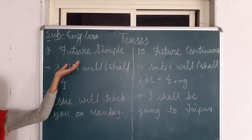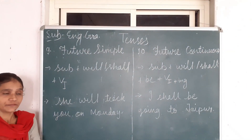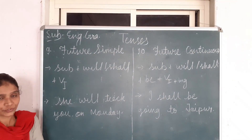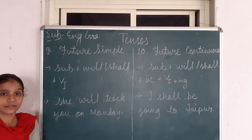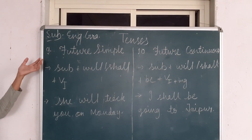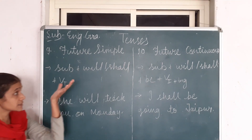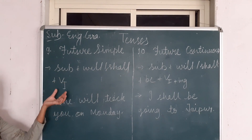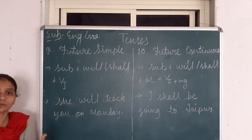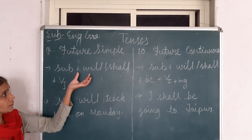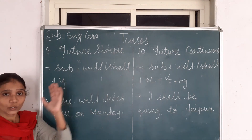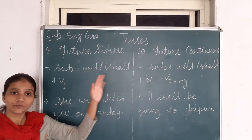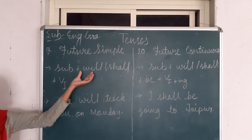Now the next is Future Tense. Eight tenses are already completed. Future Tense also has four types: Future Simple, Future Continuous, Future Perfect, and Future Perfect Continuous. The ninth tense is Future Simple. Sentence structure: Subject + will/shall + first form of the verb + Object or Complement. When the subject is I or we, we use 'shall,' and with other subjects we use 'will.' But we can use 'will' with I or we also when we are very sure about the action.